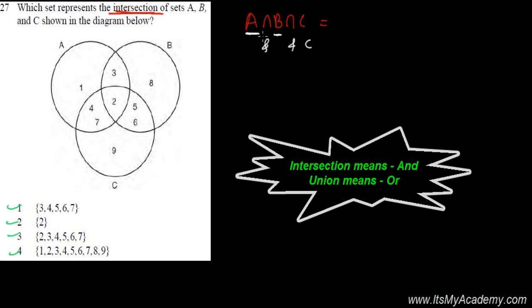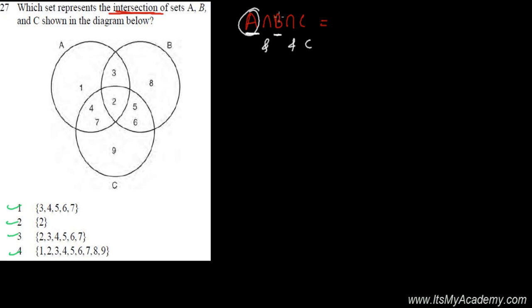So here, a number that is in A, that is in B, and that is in C also. What is that number? If you see here, 2, this 2 is found in A, and the same is found in B, and the same is found in C.